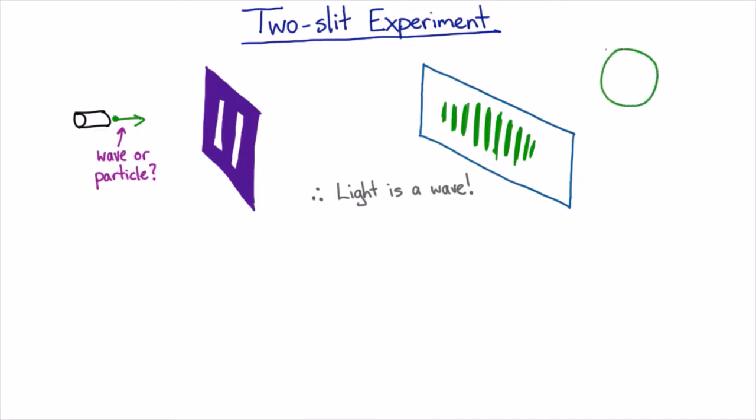Then what you should have in the middle of the shadow is a bright spot, because all the light going around the edges of your blockage should all constructively interfere there, and you get a bright spot.